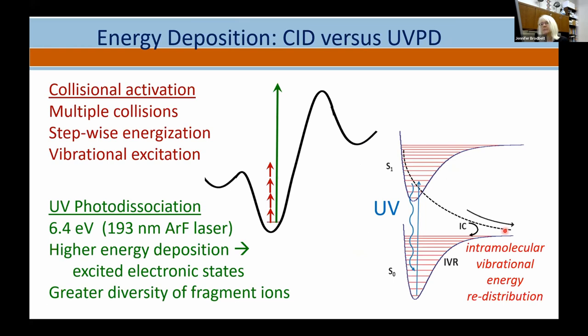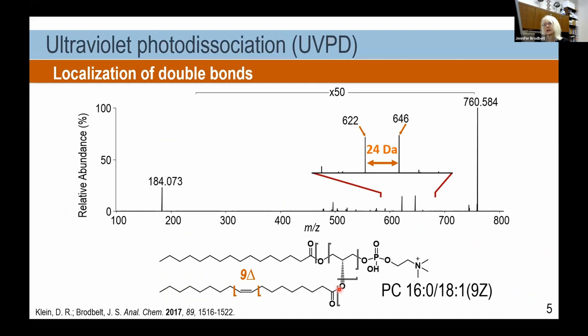Regarding the mechanism: ions sitting in an energy well transferred by electrospray are stable species. With collisional activation, we energize them via stepwise collisions that heat the molecule in vibrational modes, giving fragmentation from vibrational excitation. UV photodissociation is quite different — the much higher energy deposition per photon elevates ions into excited states, creating a greater diversity of ions and fragmentation pathways.